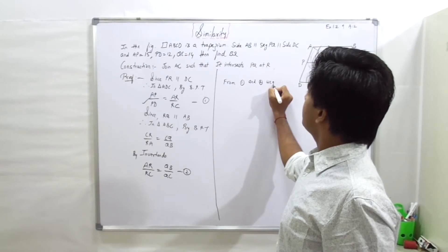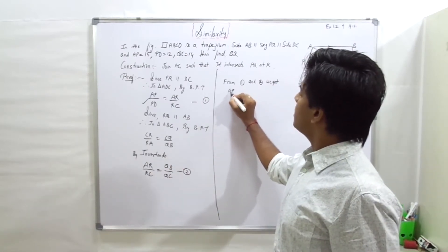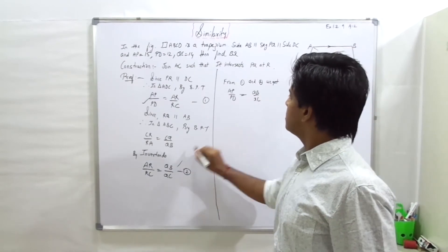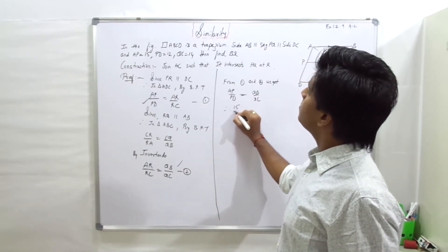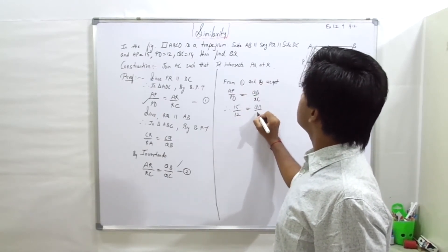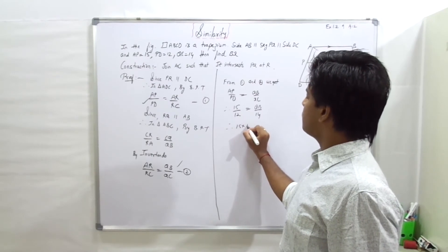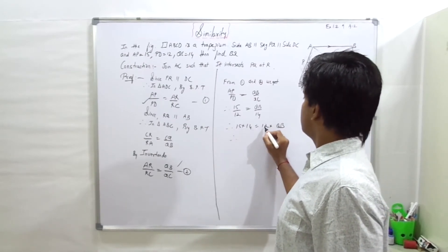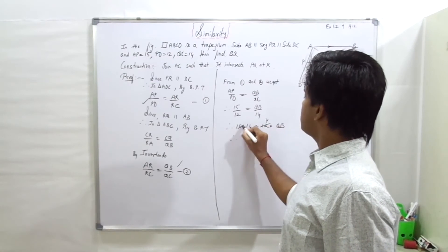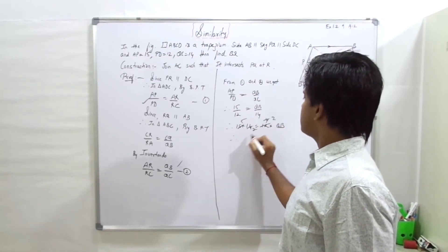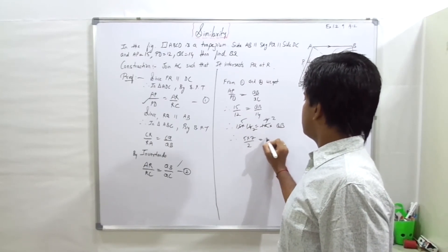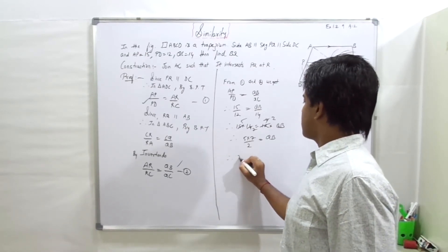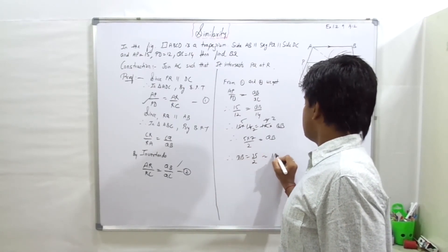AP upon PD equal to QB upon QC. AP value 15, PD value 12, QB value 8, QC value 14. Therefore 15 into 14 equal to 12 into QB. Therefore, canceling, 14 divided by 2 equals 7, so 5 into 7 upon 2. Therefore QB equal to 35 upon 2, that is equal to 17.5.